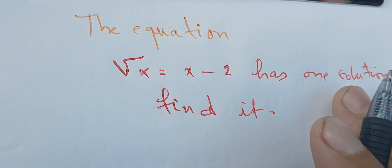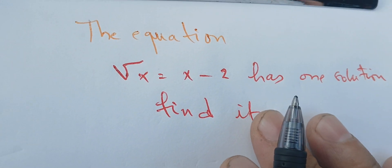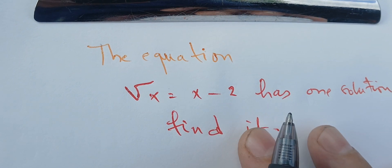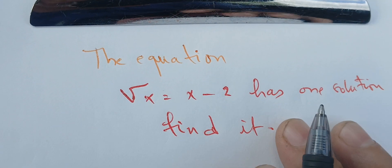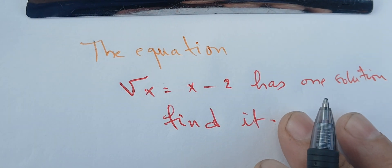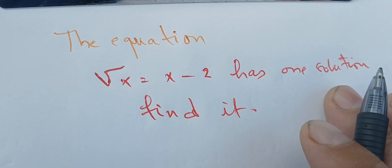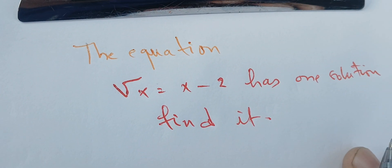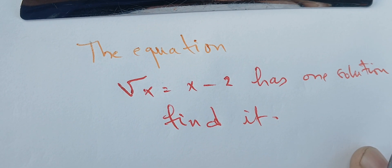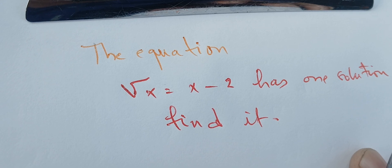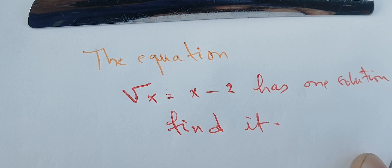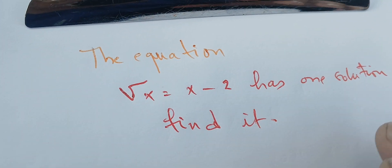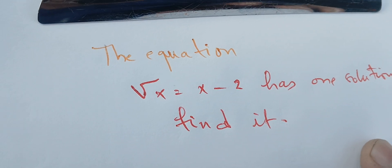In this video we're going to solve the following equation: the square root of X is equal to X minus 2. We are told that this equation has one solution and we need to find it. This problem seems simple, but the way that we solve it is the most important thing — so we learn how to solve this kind of question.